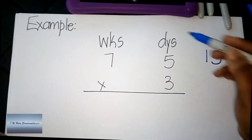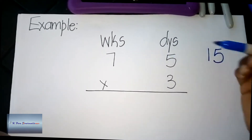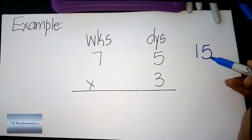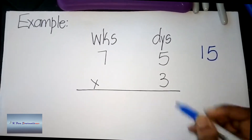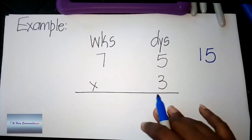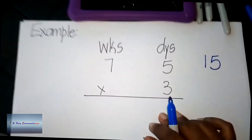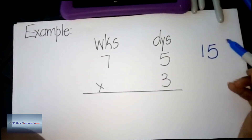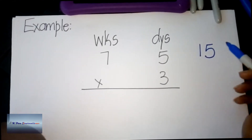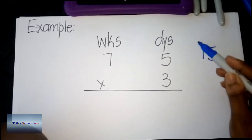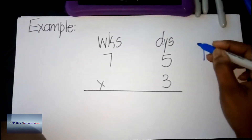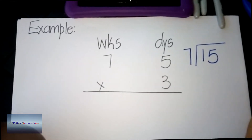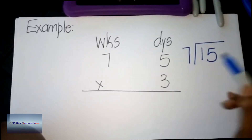I cannot take the entire 15 and put it at the bottom because this is 15 days. What it means is that I will have to take this 15 days and change it into weeks and days before I write anything at the bottom. We said seven days make a week, so we are going to use seven to change 15 days into weeks — we do that by dividing by seven.